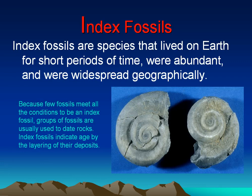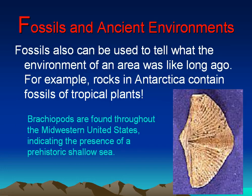Index Fossils. Index fossils are species that lived on Earth for short periods of time, were abundant, and were widespread geographically. Because few fossils meet all the conditions to be an index fossil, groups of fossils are usually used to date rocks. Index fossils indicate age by the layering of their deposits.